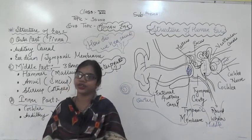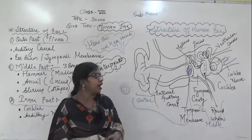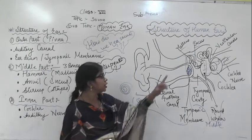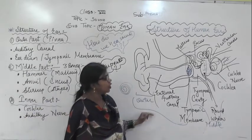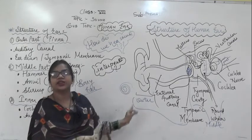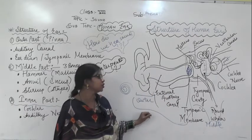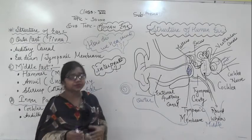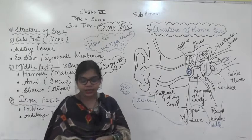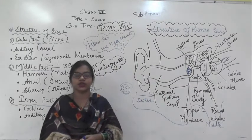This nerve system is known as the auditory nerve system, which sends signals to the brain so you can interpret the incoming sound waves. That is how the human ear works. You need to draw the diagram of the human ear and prepare notes covering the parts of the human ear, how it works, and its structure — that is the most important thing. We only see the outer part of the ear, but it is a very sensitive organ of our body. Thank you and have a nice day.